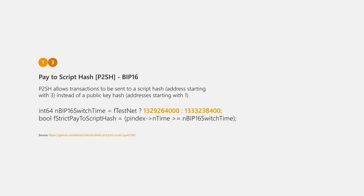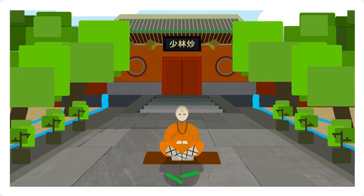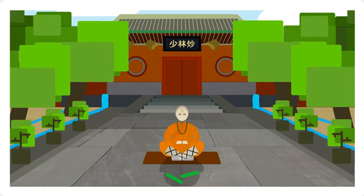UASF as an idea is not entirely new. In fact, we had something similar in 2012 when Pay-to-Script-Hash was introduced into Bitcoin. However, its current proposal by Litecoin core developer Shaolin Fry in the form of BIP-148 is slightly different in its approach, although the goal is still the same: to pressure change through the use of nodes.